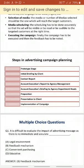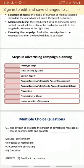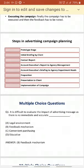Next are the steps in advertising campaign planning. The first step is the prototype stage. In this stage, they decide the framework, color, size, and theme, making sure the theme is visible and attractive in order to create a proper campaign.